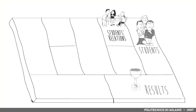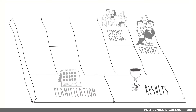What are the expected learning outcomes for your course? How will you plan your teaching? In other words, how will you check the coherence between learning outcomes, teaching and learning methods, and assessment?